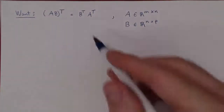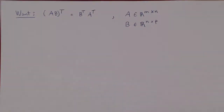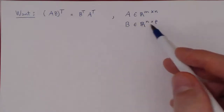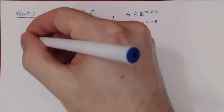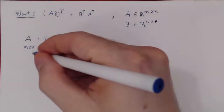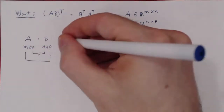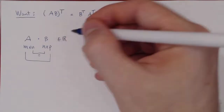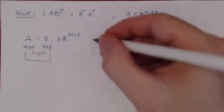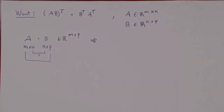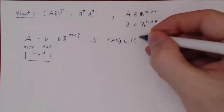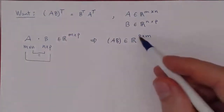So let's prove this. To have an equality of matrices, we have to check that they have the same size. Let's assume that A is an M by N, and since AB is defined, B has to be an N by P. So A is M by N times B, which is N by P, and AB is an M by P matrix. So if AB is M by P, when you transpose, you flip the rows and the columns, so AB transposed is a P by M matrix.